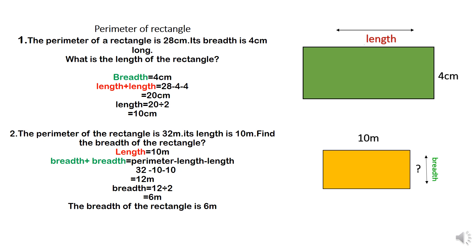Let's do another example. In this example, the perimeter is 32 meters and its length is 10 meters. Here we have to find the missing breadth. Again, I am using the doubling strategy. The length is 10; double 10 is 20. To find both the breadths: perimeter minus the double length, so 32 minus 10 minus 10 equals 12. Now we have to find one side of breadth. One breadth is half of 12, so 12 divided by 2 gives us 6. The breadth of this rectangle is 6 meters.